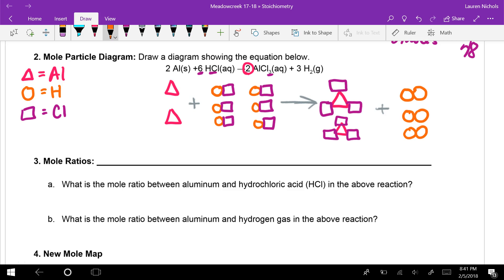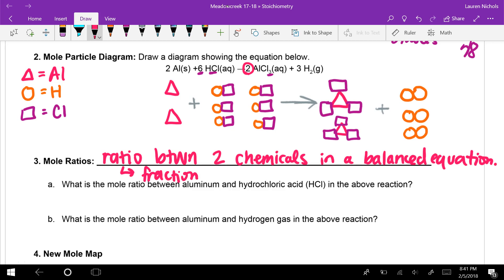And so we've been talking about coefficients and we've mentioned mole ratios before, but we need to actually go into what a mole ratio is. So a mole ratio is a ratio between two chemicals in a balanced equation. Okay, now a ratio can be a fraction or an inequality.